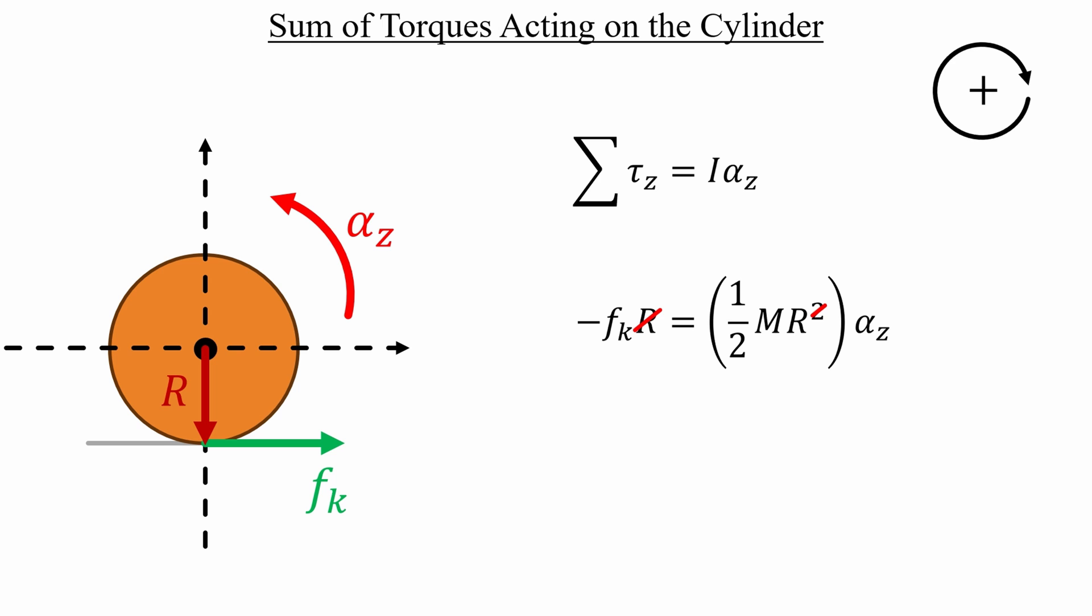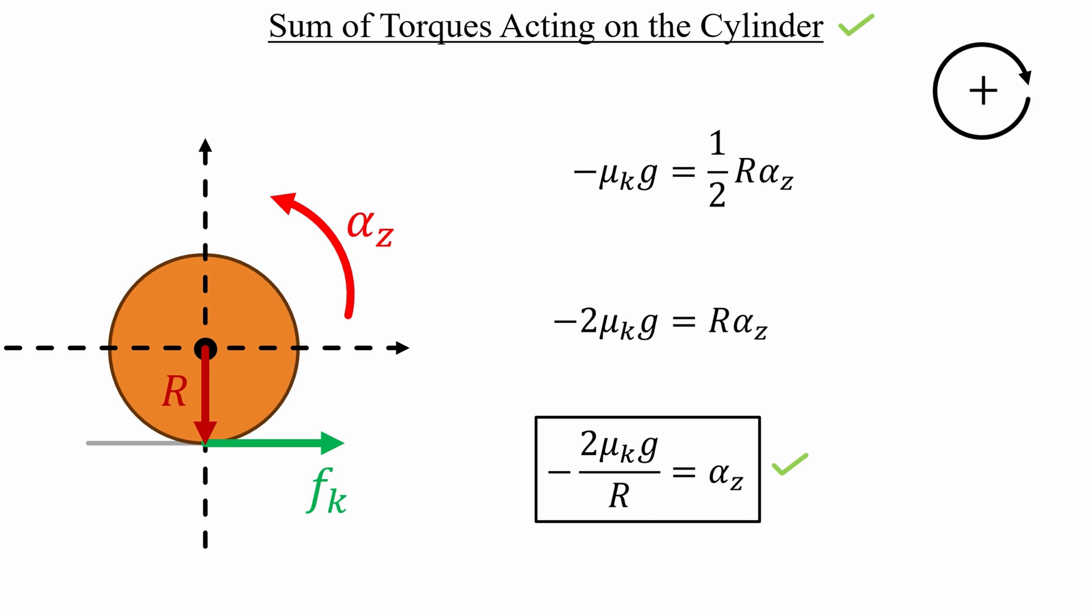We get the mass on both sides again. So let's get rid of that, and then simplify. If we multiply both sides by 2, and then divide both sides by the radius, we get a negative angular acceleration that matches our free body diagram. And part A is now done.